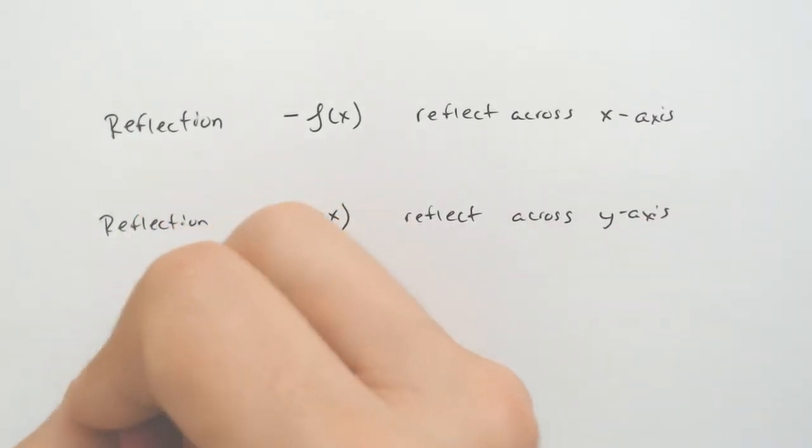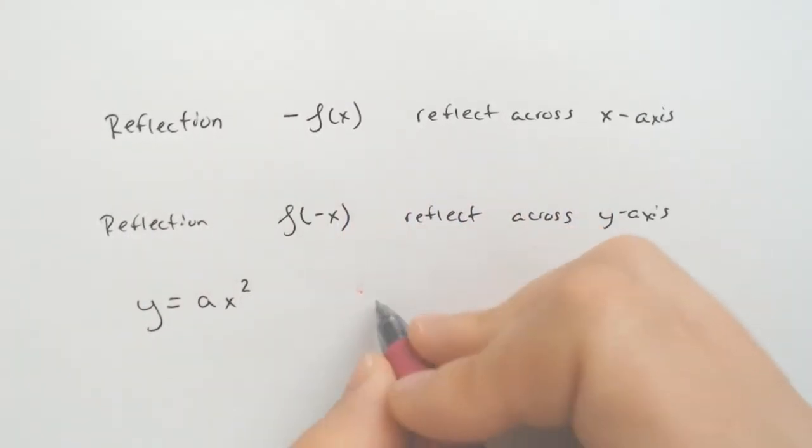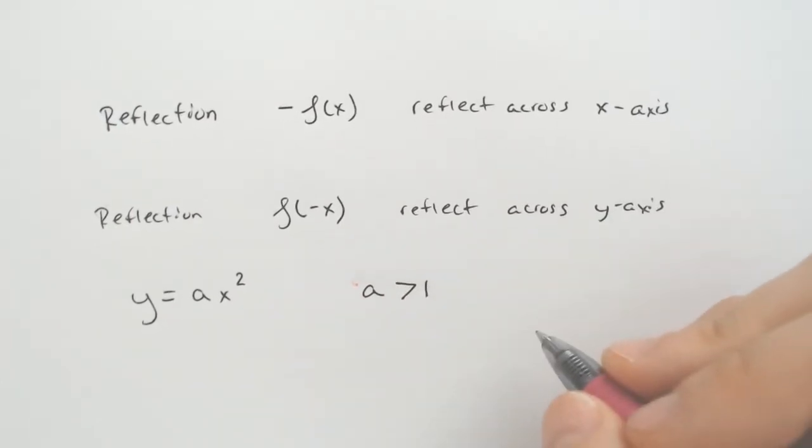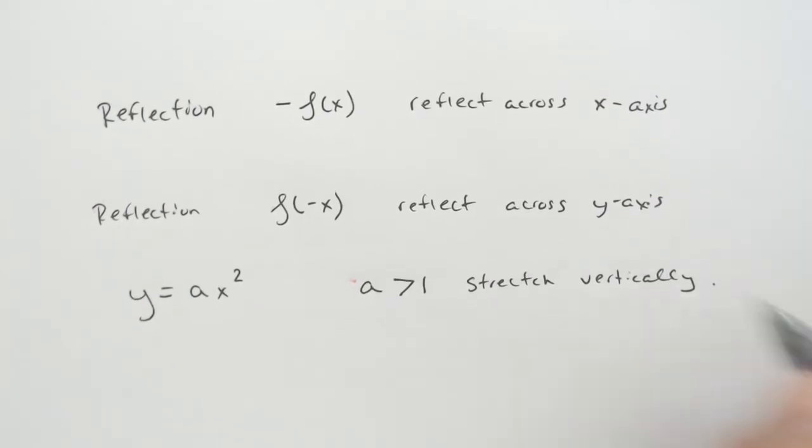Specifically there is, let's say y equals ax squared. If a is greater than one or a big number, then it is going to stretch vertically. And I'm going to show you what all these mean.